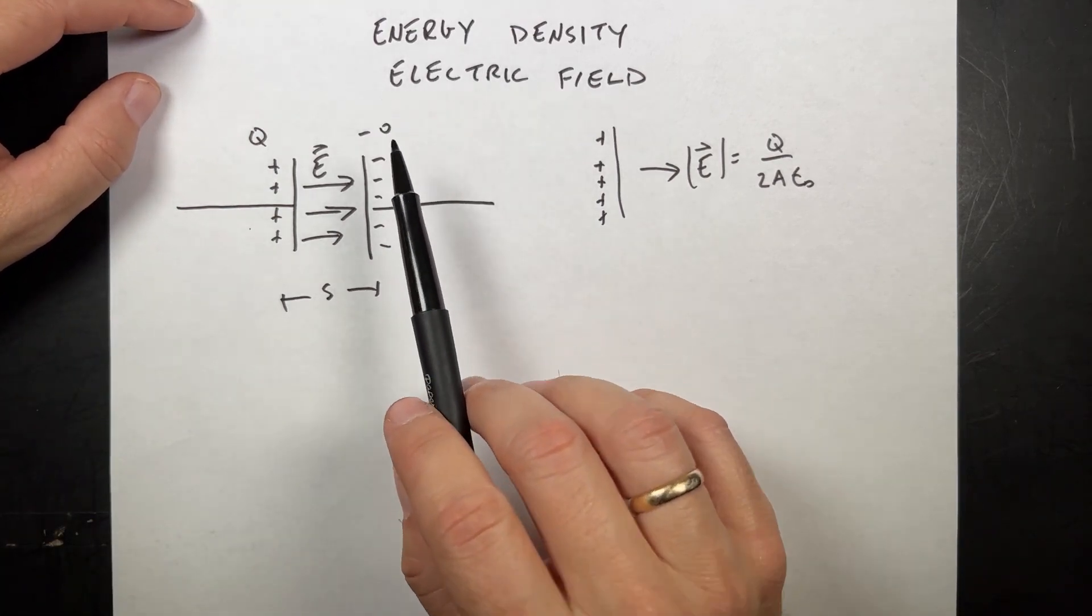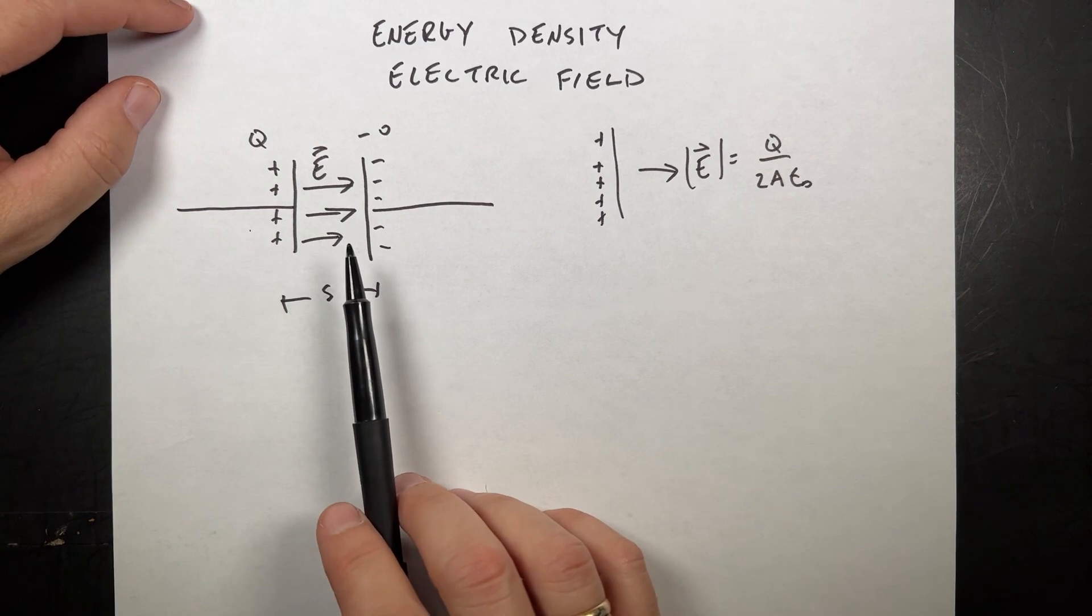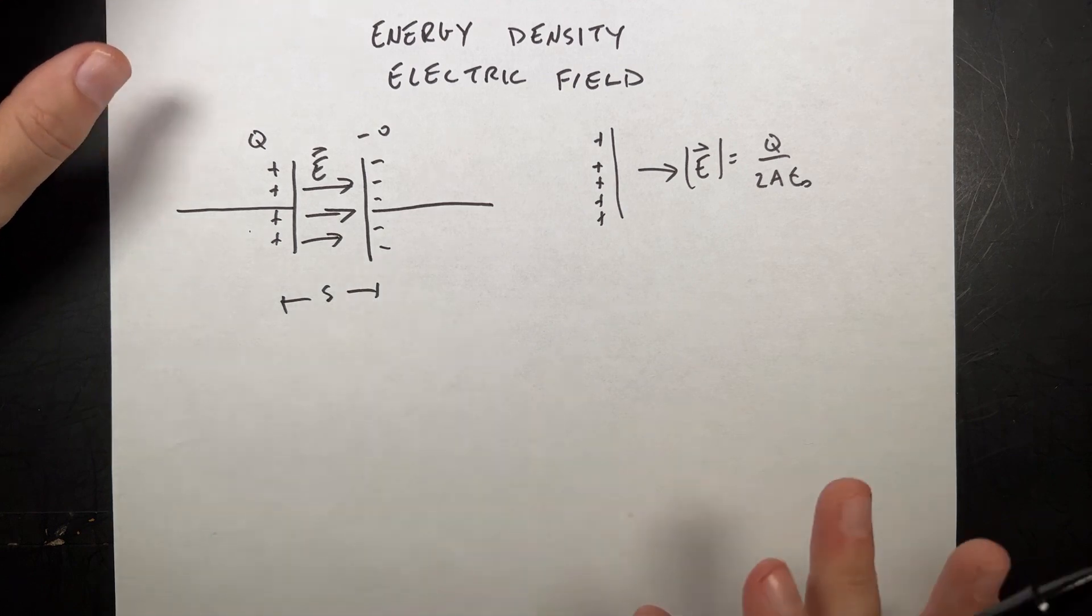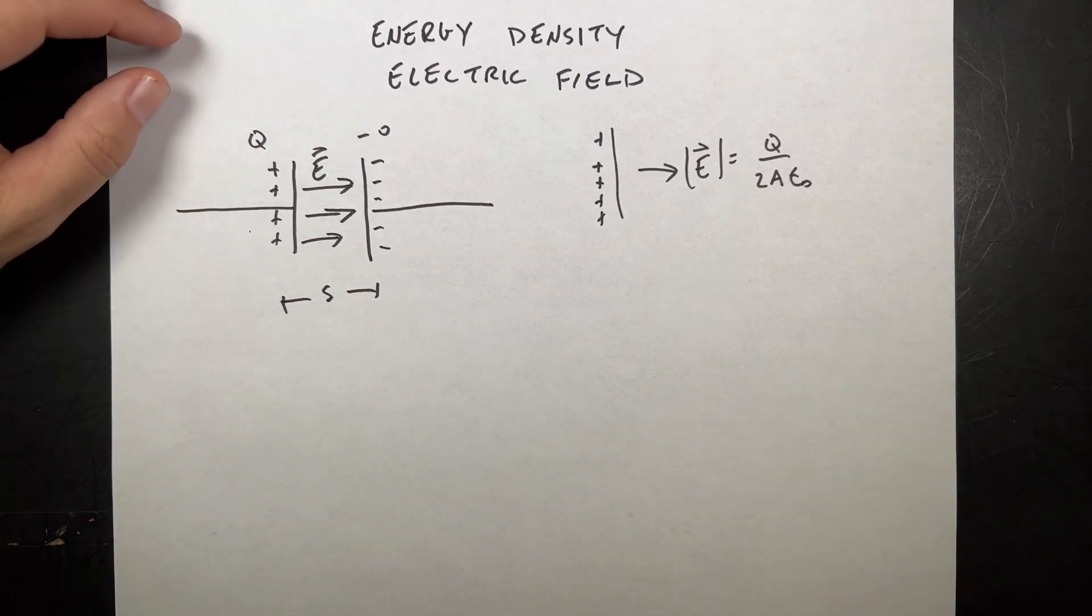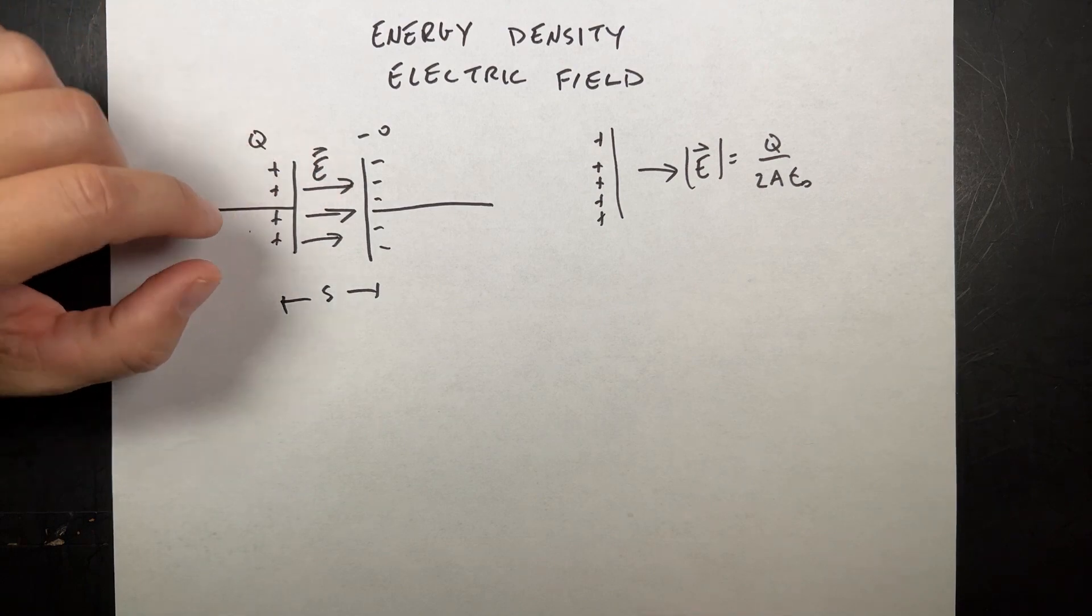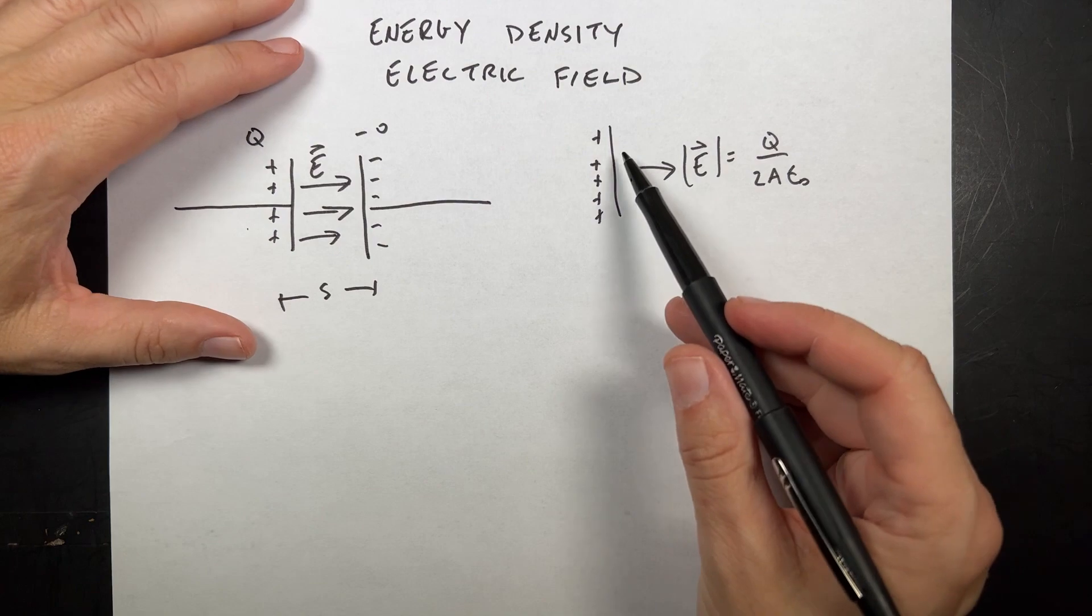Let's find an expression for the energy density of the electric field. It's kind of a big deal. It's useful for a lot of things. So to do this, the best trick to find this expression is to start with a parallel plate capacitor. In particular, start with a parallel plate.